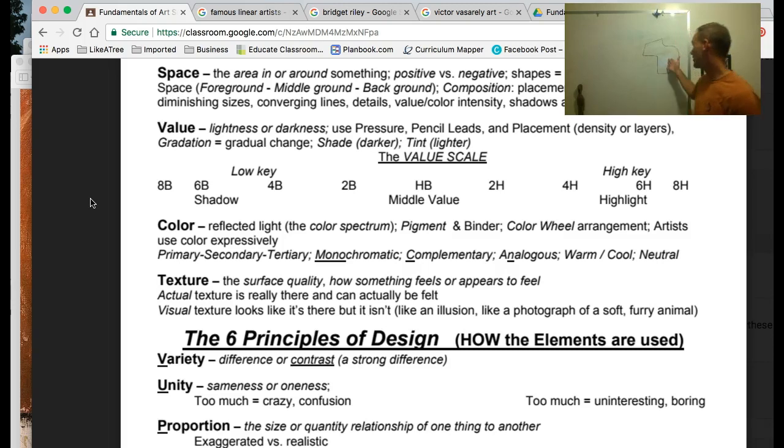For instance, on the board, the positive space would be this shape that I've created, and the negative space would be the space around the shape. We want to be aware of both of those in our art.